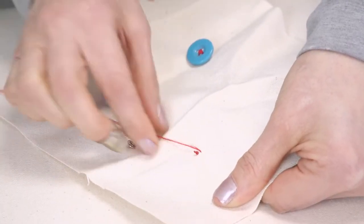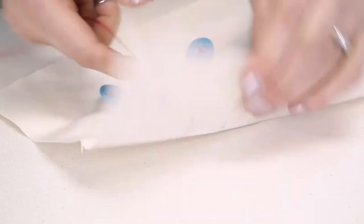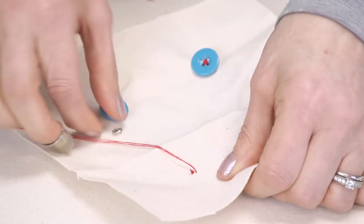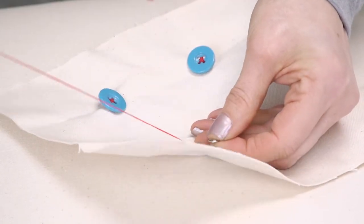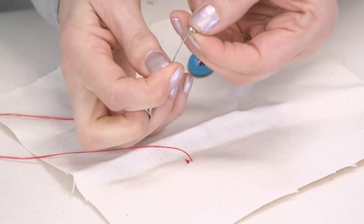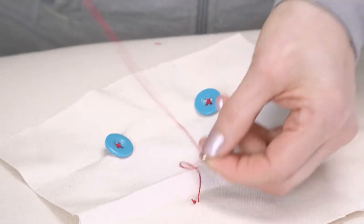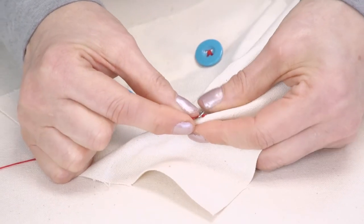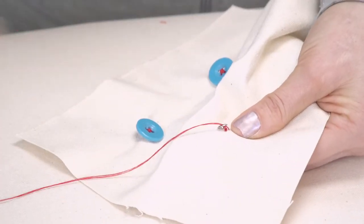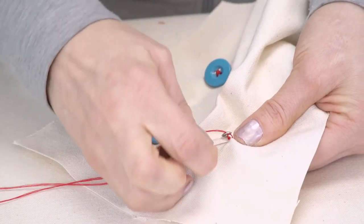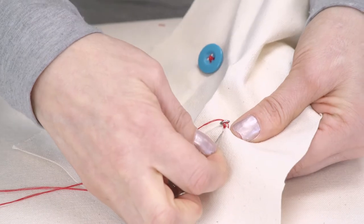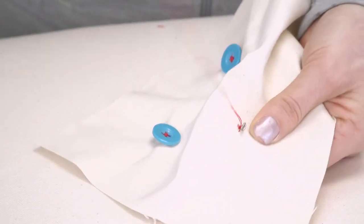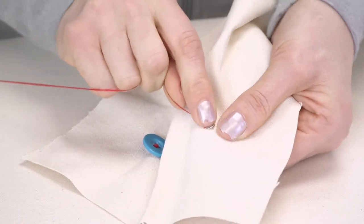So put the needle thread so we just have a prick on that side. Take our little tiny snap. Put it up through one of the holes. And we're actually going to drop down through the material and come across to the other side of the snap at this point.